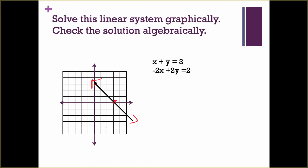For the next equation, if I make y go to 0, I'm left with negative 2x equals 2. Divide by negative 2, and I get x equals negative 1, so my x-intercept is there. If I make x go to 0, I get 2y equals 2, divide by 2, and y equals 1. We draw our line through those points with arrows on the ends, and we cross right here at the point (1, 2).